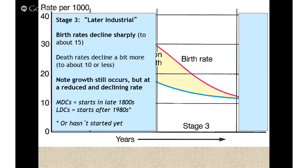Stage three is where birth rates decline very sharply. The reason is a movement to cities — as people move from rural areas to cities, there's less need to have a lot of babies because you don't need five, six, or seven kids working on the farm. There's more movement into office-type jobs, families shrink, and medical advancements continue to increase, so the population stabilizes a bit.